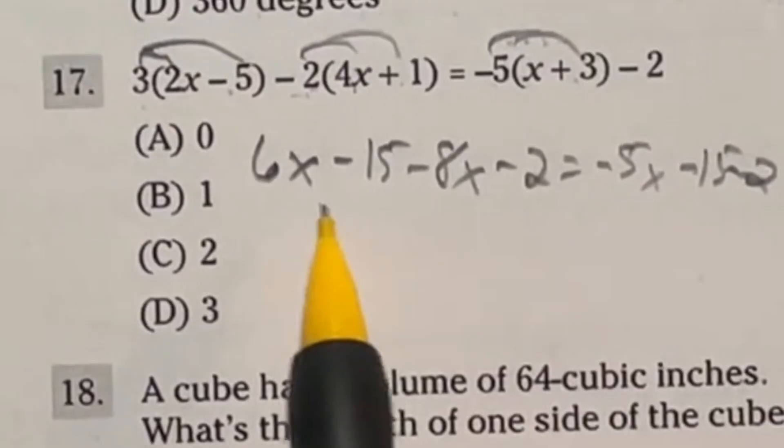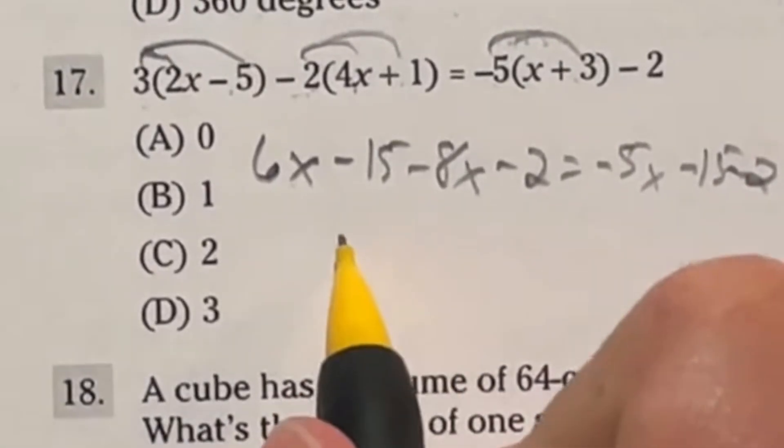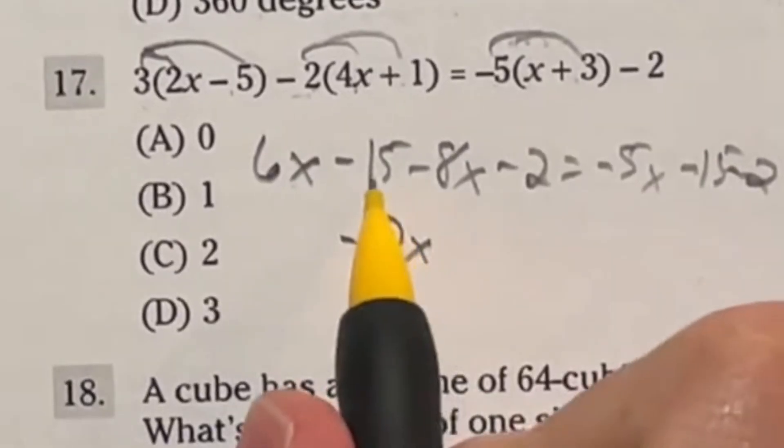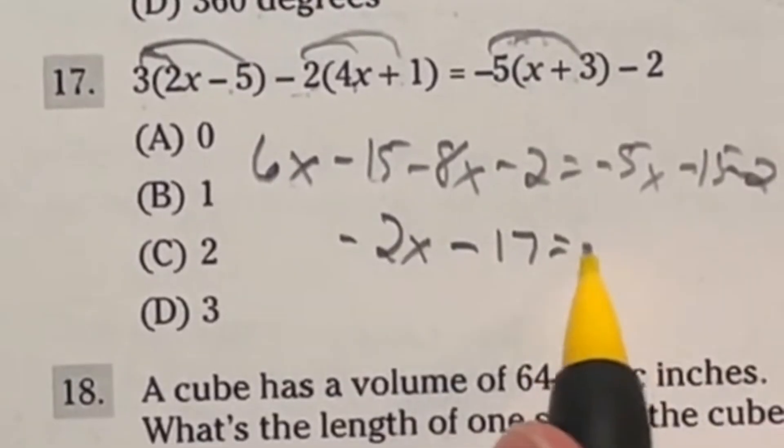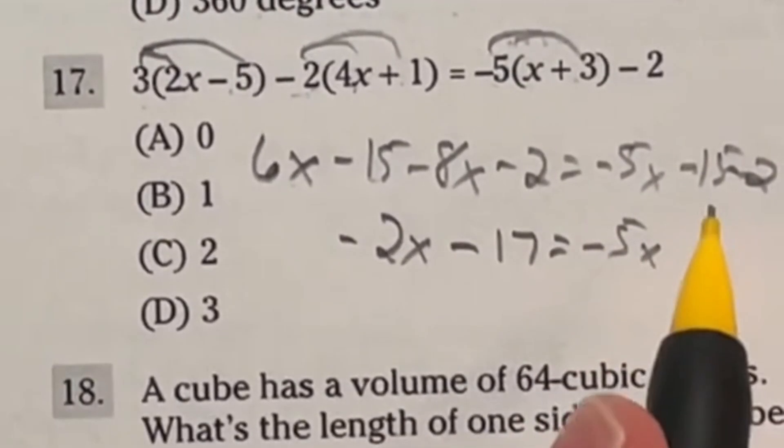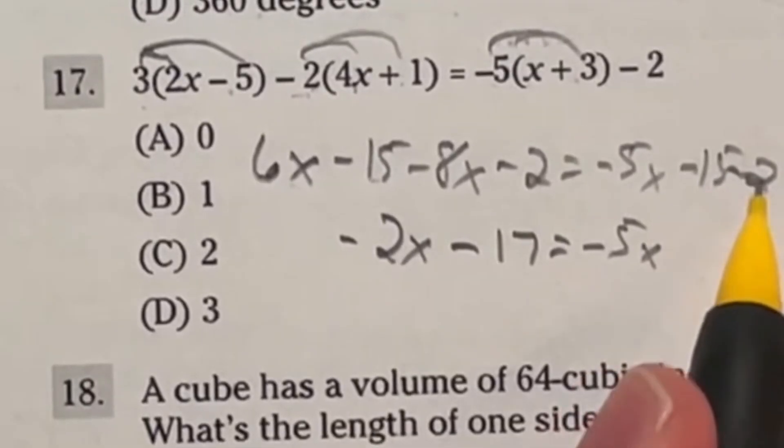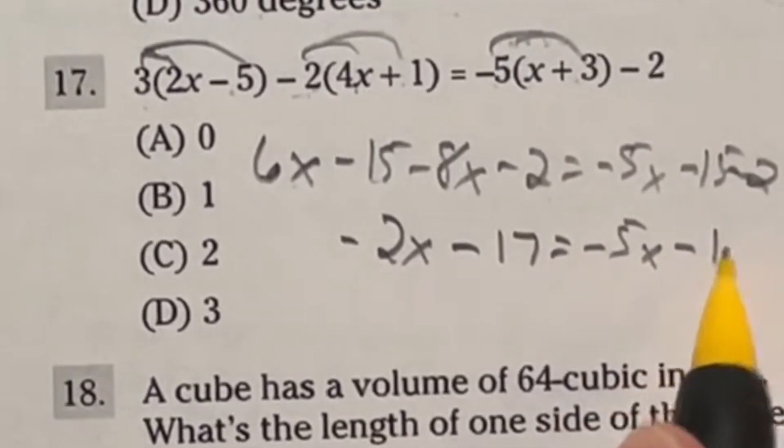Then we got to combine like terms. Well, I got a 6x and a negative 8x. That's going to give me negative 2x. I have a negative 15 and negative 2 going to give me negative 17. I still have a negative 5x over here, and then I still have that negative 15, negative 2 for another negative 17.